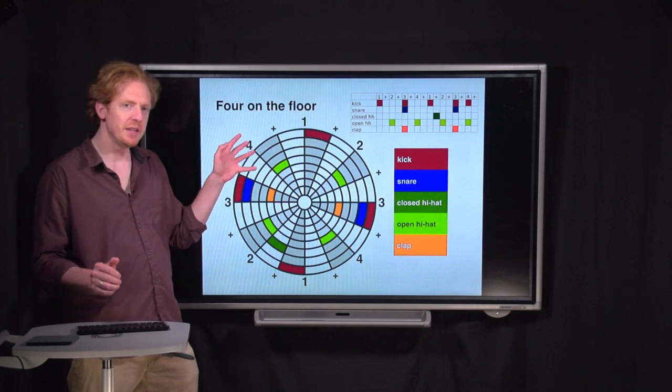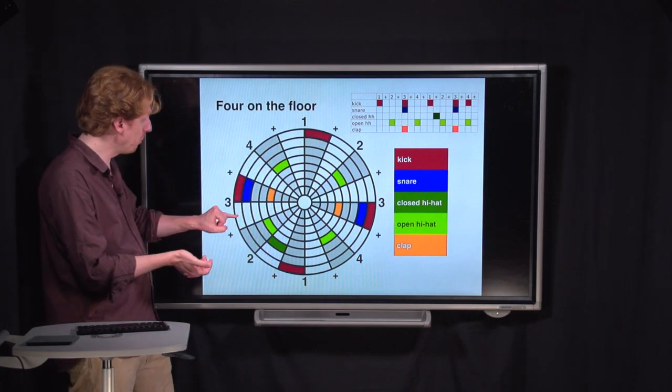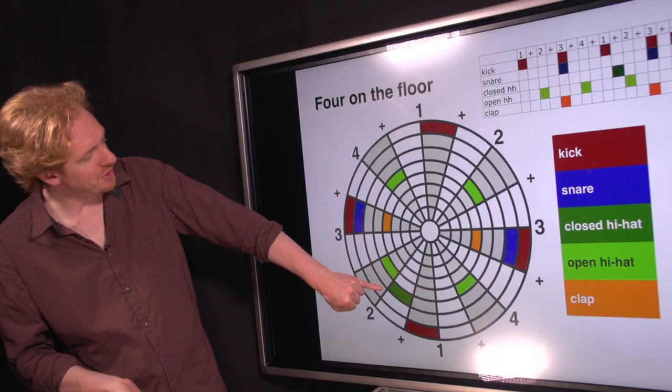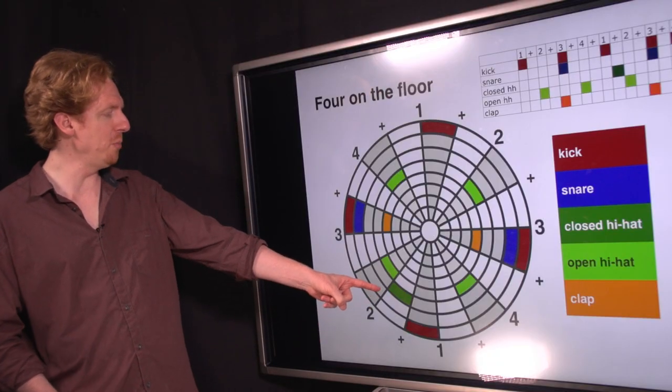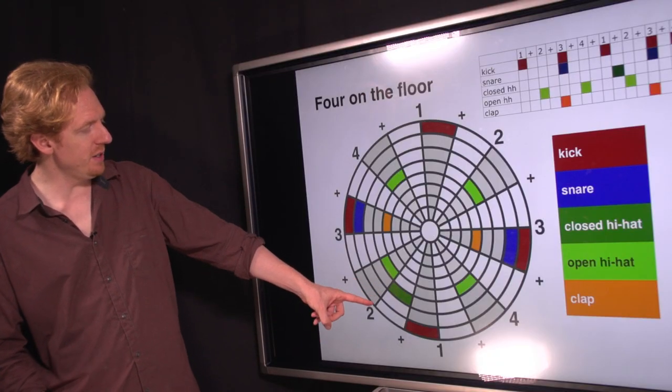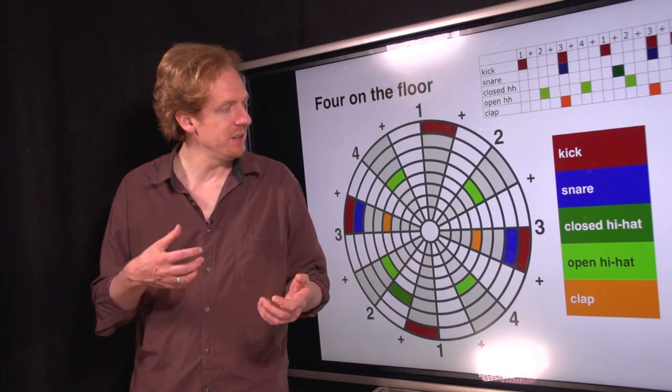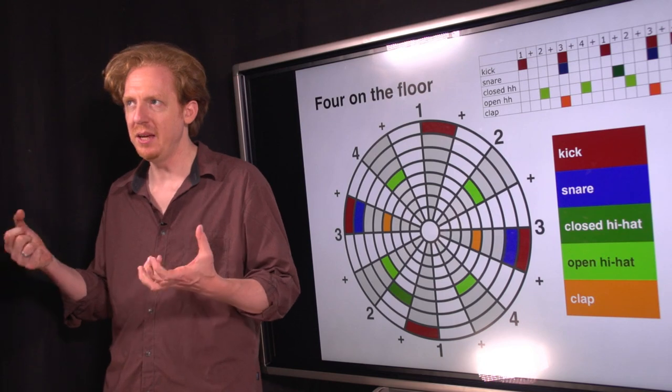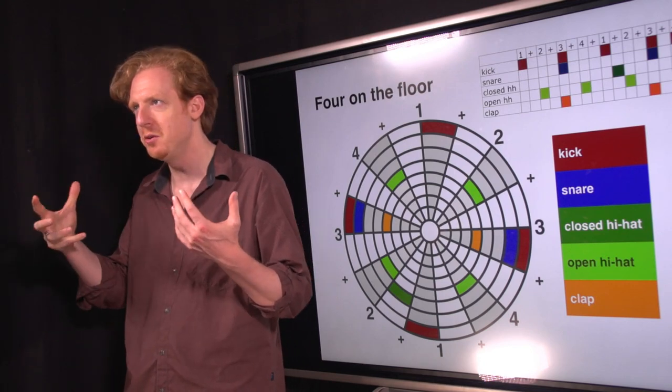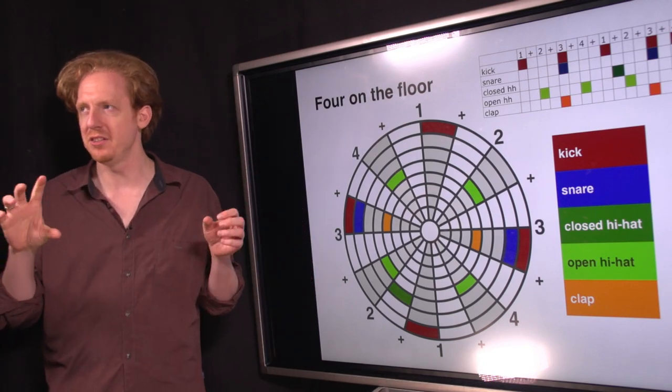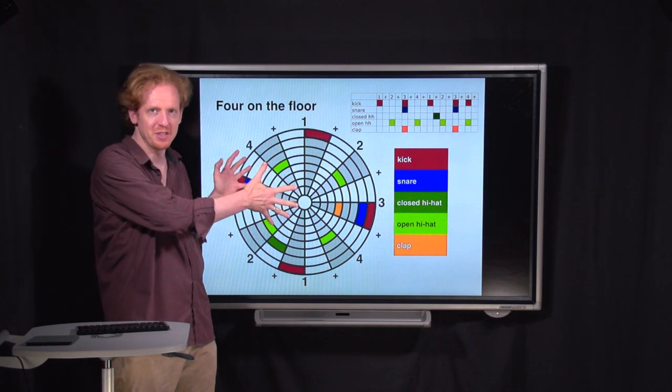So, the only thing that's keeping this beat from being totally symmetrical, predictable, and boring is this one little bit of syncopation right here. This open hi-hat on the and of one on the second measure. And that's a good way to keep your house techno disco beats from being too boring, is to introduce a little syncopation on top of the standard four on the floor.